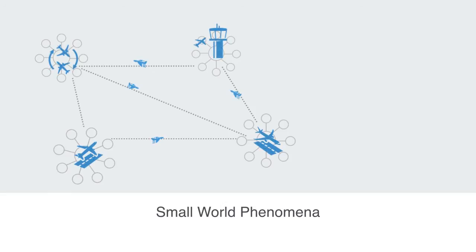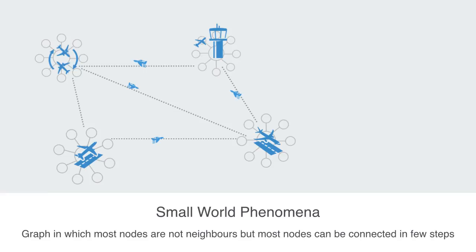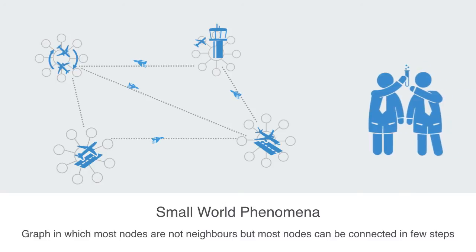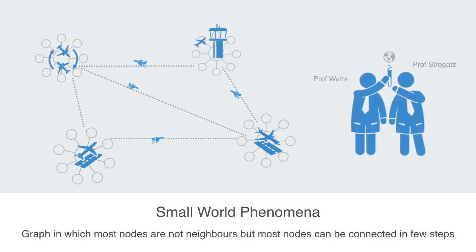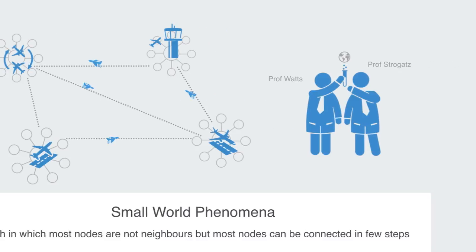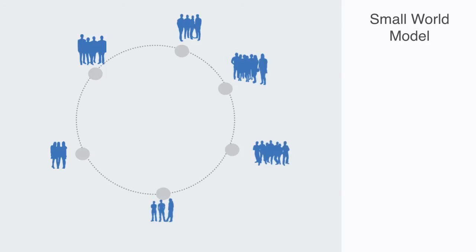The result is local clustering but also some global connections between clusters, and this gives us the small world phenomena. A small world network is a type of graph in which most nodes are not neighbors of one another, but most nodes can be reached from any other by a small number of connections. This category of small world network was identified by Duncan Watts and Steven Strogatz in 1998. They measured that many real-world networks have a small average shortest path length, but also a clustering coefficient significantly higher than expected by random chance. This is counterintuitive — even with significant clustering, the shortest path length remains small.